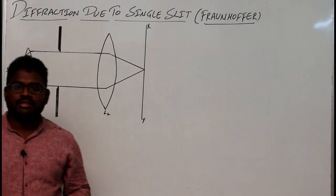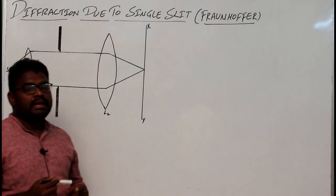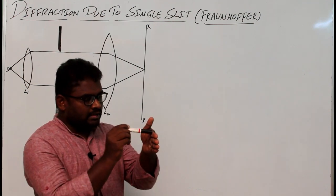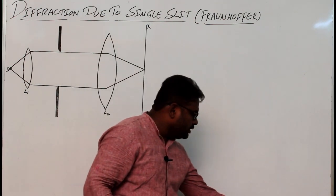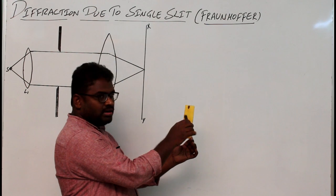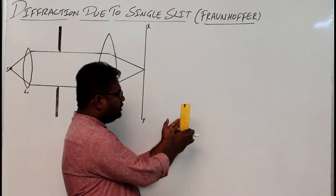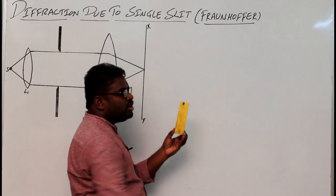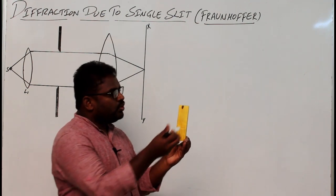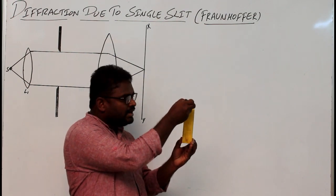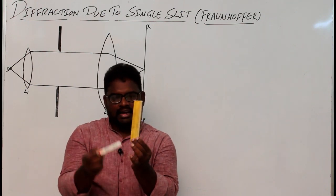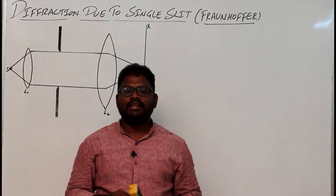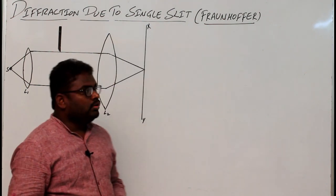Today we are going to see the diffraction due to a single slit. Diffraction means the bending of light at the edges of an obstacle. Whenever light falls on an obstacle it bends and travels to the shadow region. If I take a disk and incident light on it, on the screen I'll get a shadow. The shadow is not a perfect one — the geometrical shadow region is illuminated by some light rays that bend and travel at the edge of the obstacle. This phenomenon of light is known as diffraction.